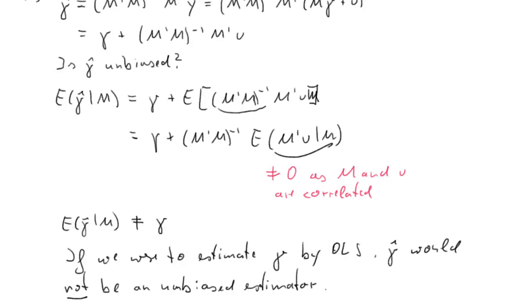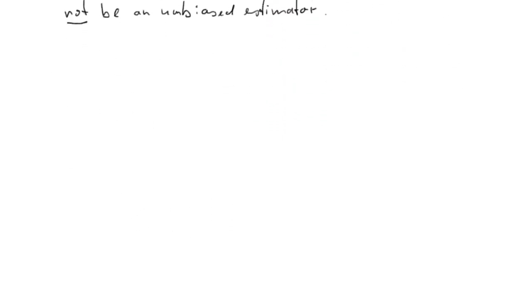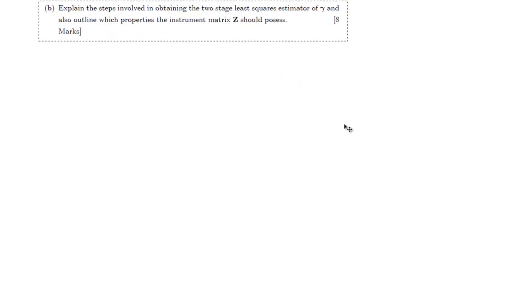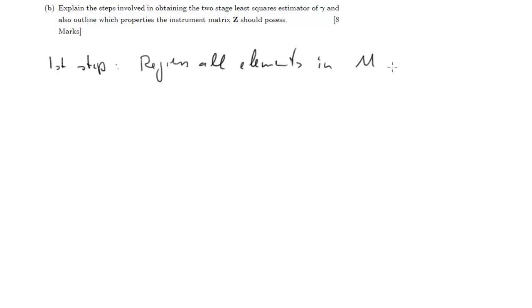Let me now just copy in part B so we can see the question. Explain the steps involved in obtaining the two-stage least squares estimator of gamma and also outline which properties the instrument matrix Z should possess. To answer this, you need to know what it means, a two-stage least squares estimator. We discussed that in the lecture. So the first step...